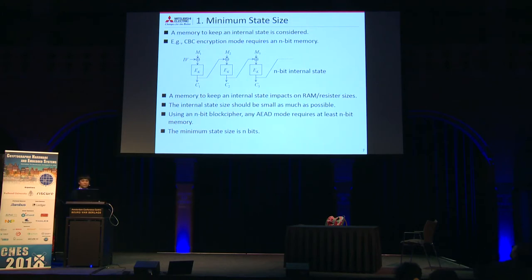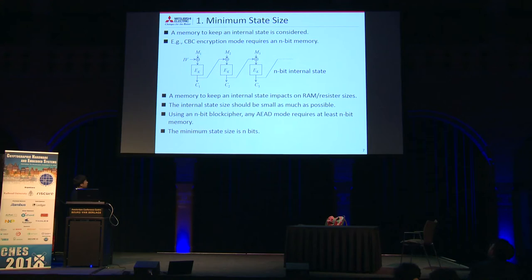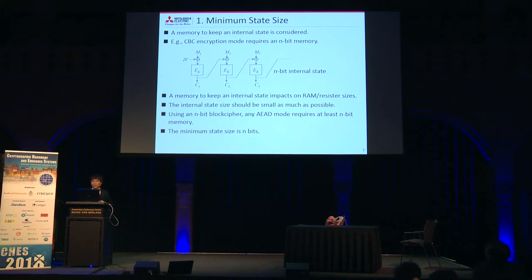The first requirement is minimum state size. This considers the memory needed to keep the internal state. In CBC encryption mode, the n-bit internal state is updated by iterating the keyed block cipher, so CBC requires n-bit memory to keep the internal state. Since memory for the internal state impacts RAM and register sizes, the internal state size should be as small as possible. Using an n-bit block cipher, any AEAD mode requires at least n bits of memory, so the minimum state size is n bits.